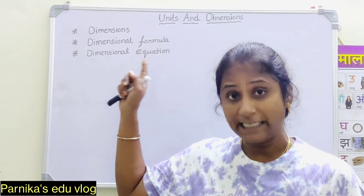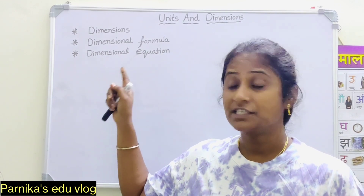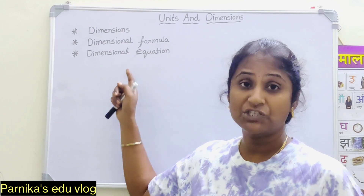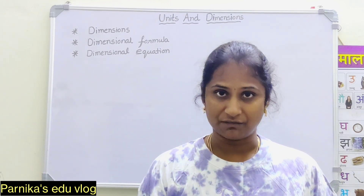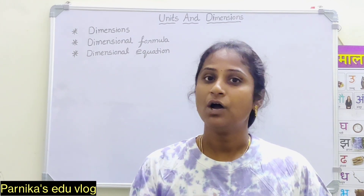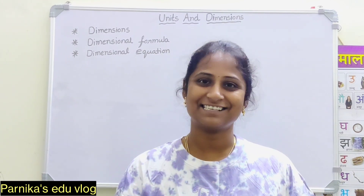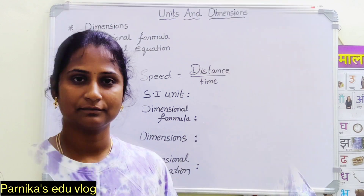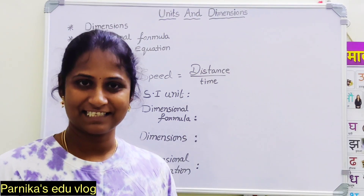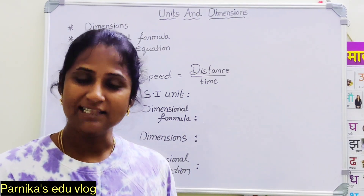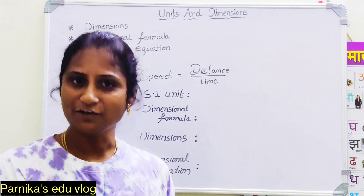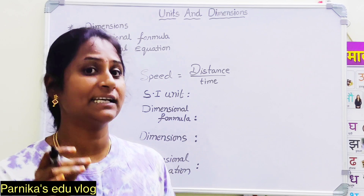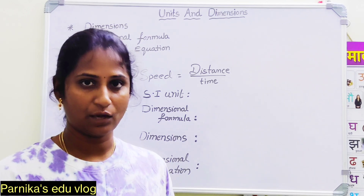What are those three? Dimensions, dimensional formula, and dimensional equation. I will take one physical quantity as an example to understand these three.